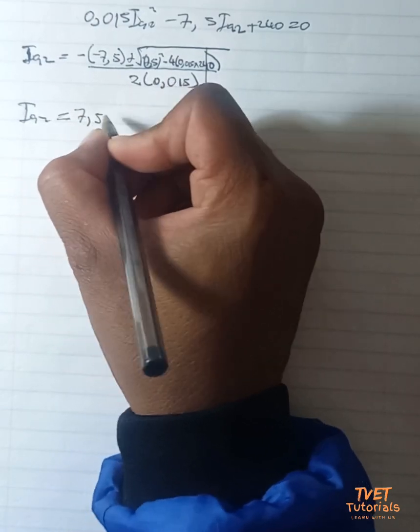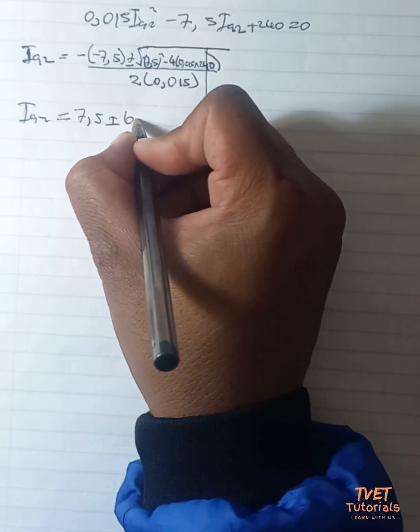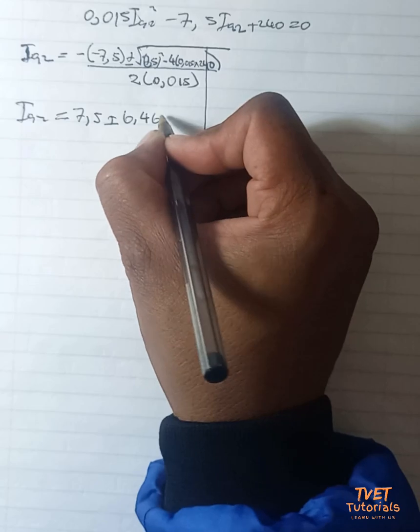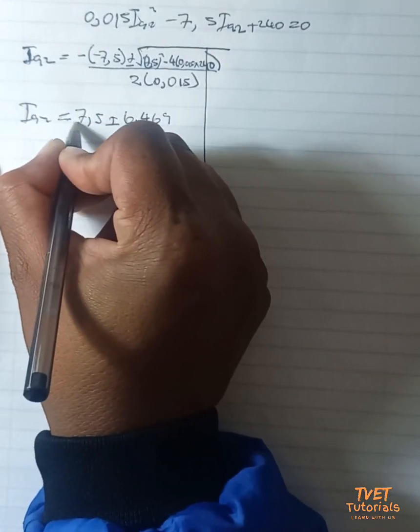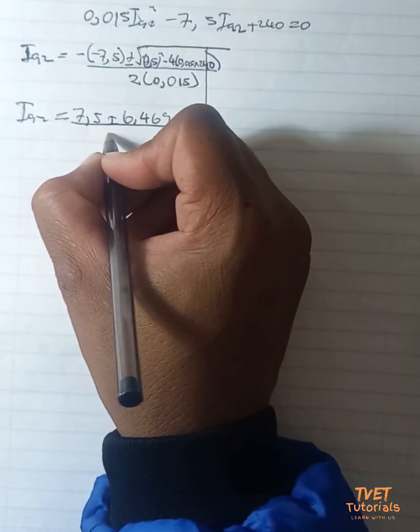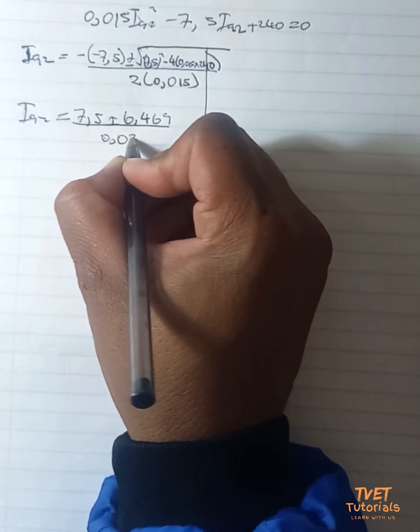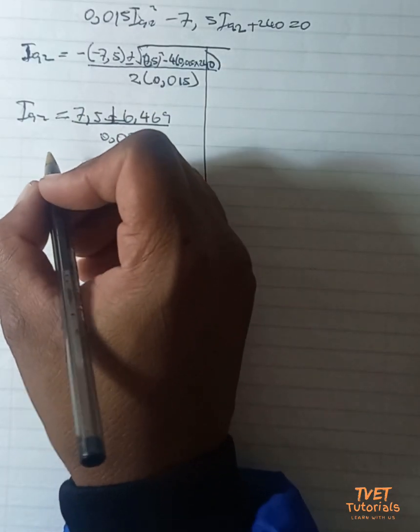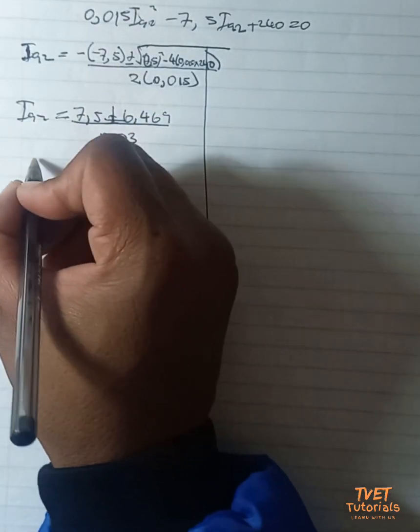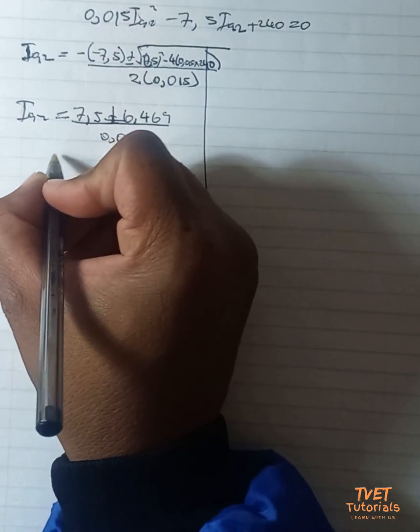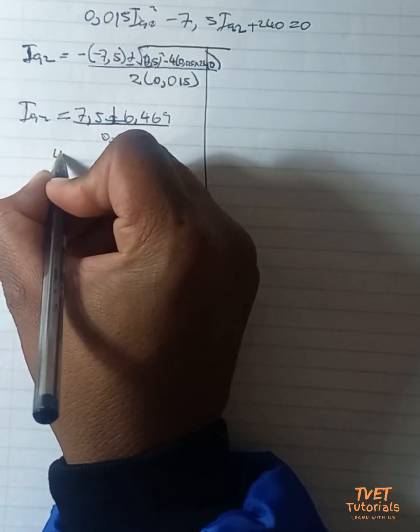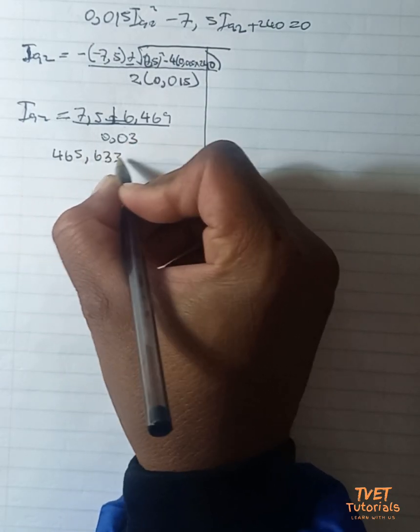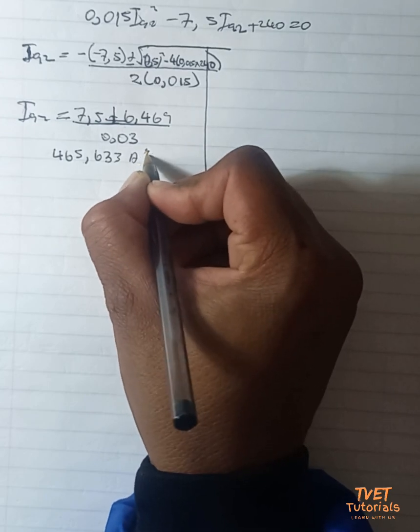I_a2 is equal to 7.5 plus or minus 6.469 divided by 0.03. Plus or minus, obviously you'll get two values. It means you'll get one value which is equal to